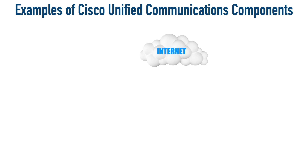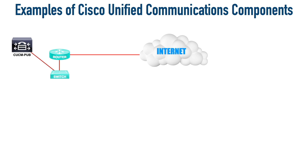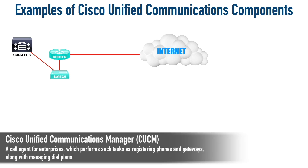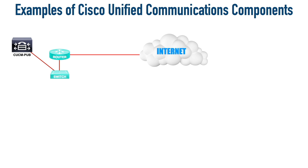First, let's imagine that we have an internet connection coming into our Enterprise, coming into our router. That router connects out to a switch, which is going to connect to other devices. One of our main Unified Communications devices is a Cisco Unified Communications Manager, or CUCM for short. Some people will call this a Call Manager because back in the day it used to be called the Call Manager. But now, Call Manager is technically the name of a service that runs on the server. What is the Cisco Unified Communications Manager server? It's referred to as a Call Agent.